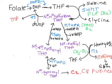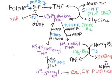Once methionine is formed, it is converted to S-adenosyl methionine (SAM). SAM acts as a methyl group donor in a variety of methylation reactions including DNA synthesis, RNA synthesis, norepinephrine to epinephrine conversion, creatine formation, protein synthesis, and histone methylation. All these methylation processes need SAM, meaning they ultimately depend on N5-methyl tetrahydrofolate and vitamin B12.